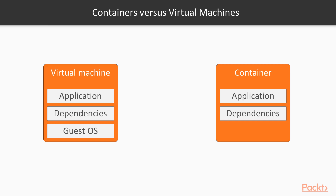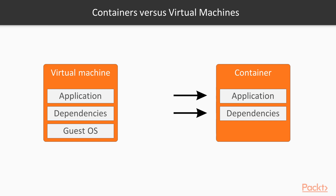Traditional virtual machine images include information about the guest virtual machine operating system, any application dependencies, and the actual application code. This means that they virtualize the hardware. Containers do not include operating system information, only the application and its dependencies. This means that they virtualize the operating system.